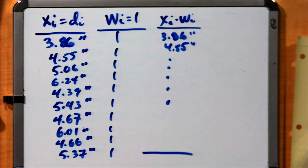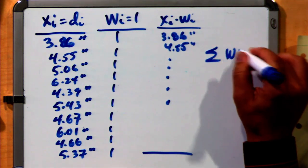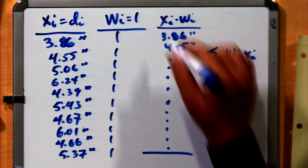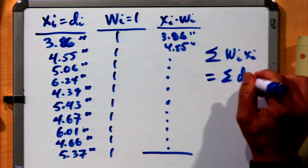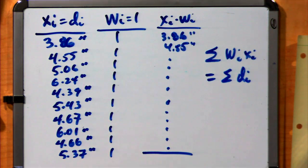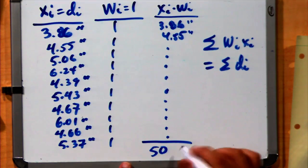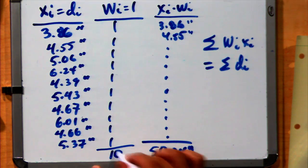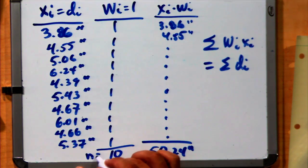We want the sum of the weights times the values. In this case, that's just the sum of all the depths di. If we add all these together, we get a total of 50.24 inches. If we add up all the weights, there are 10 elements. We use n to represent the number of data points, so n equals 10.